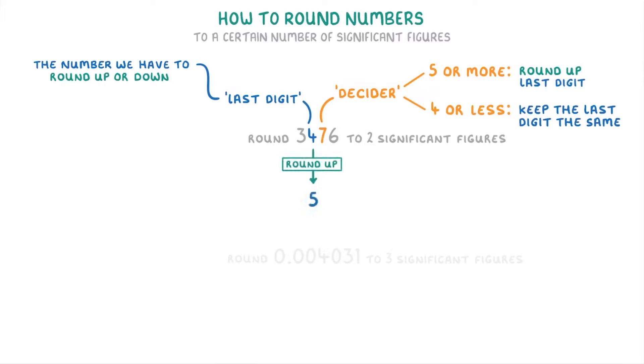And now because we rounded it, we change these last two digits to zeros and finish by writing in the three in front, giving us 3500 as our answer. Another way of thinking about it is that because our last digit was in the hundreds column, we just round the whole number to the nearest hundred. So 3476 becomes 3500.